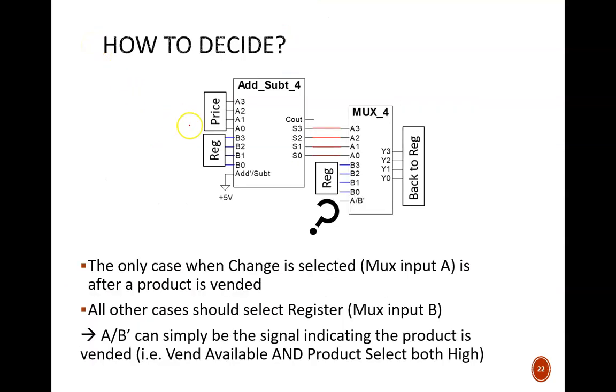This new setup is missing just one input signal, A slash B prime, on the MUX. How do we decide which of these two possibilities is selected to circle back to the register? Think about the operation of the vending machine.